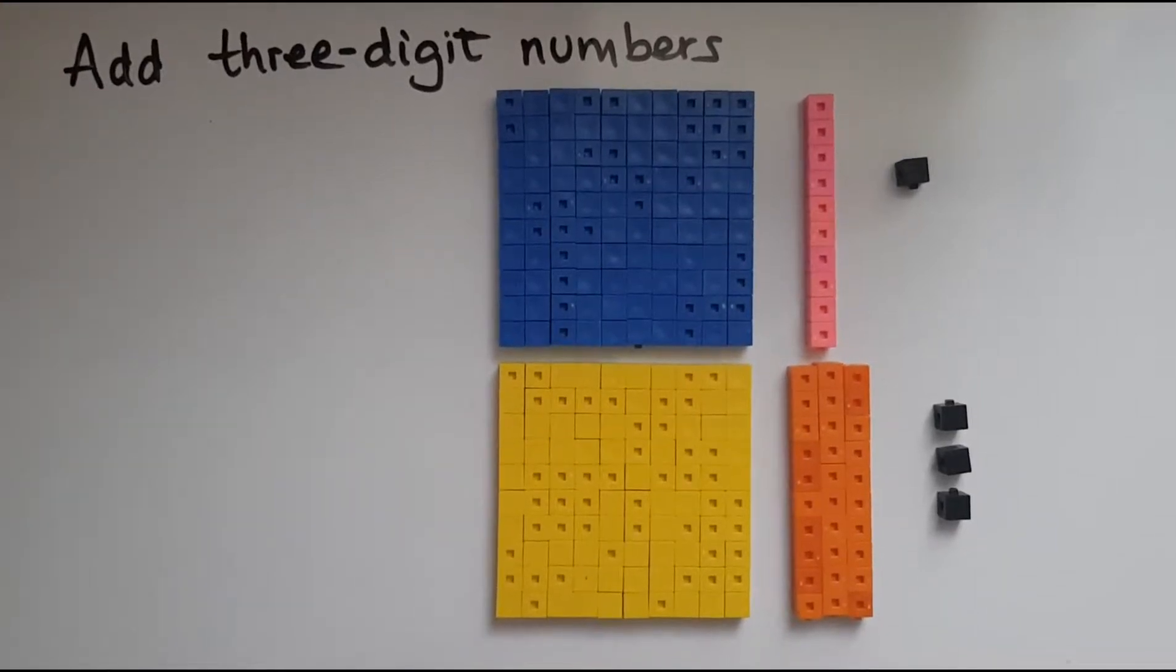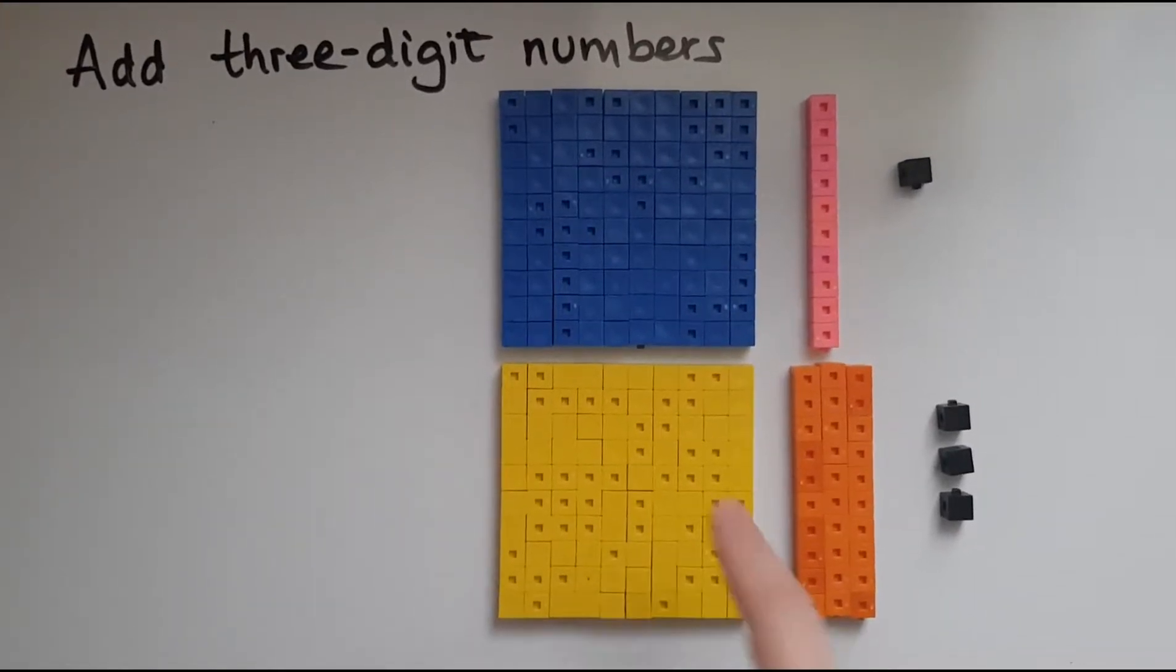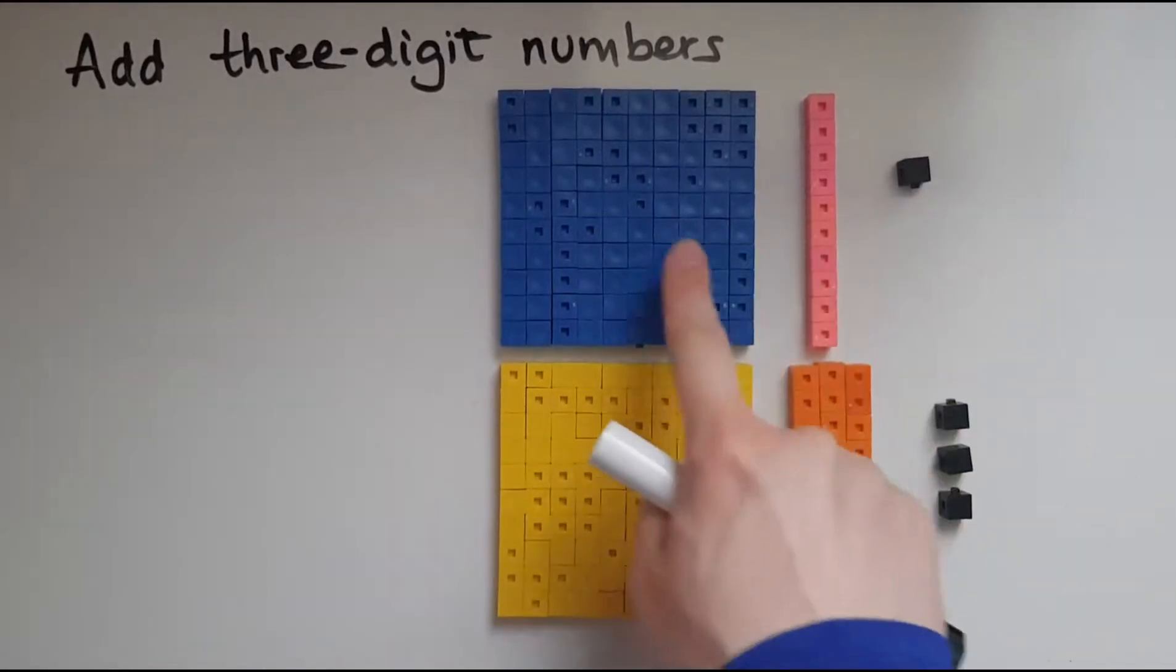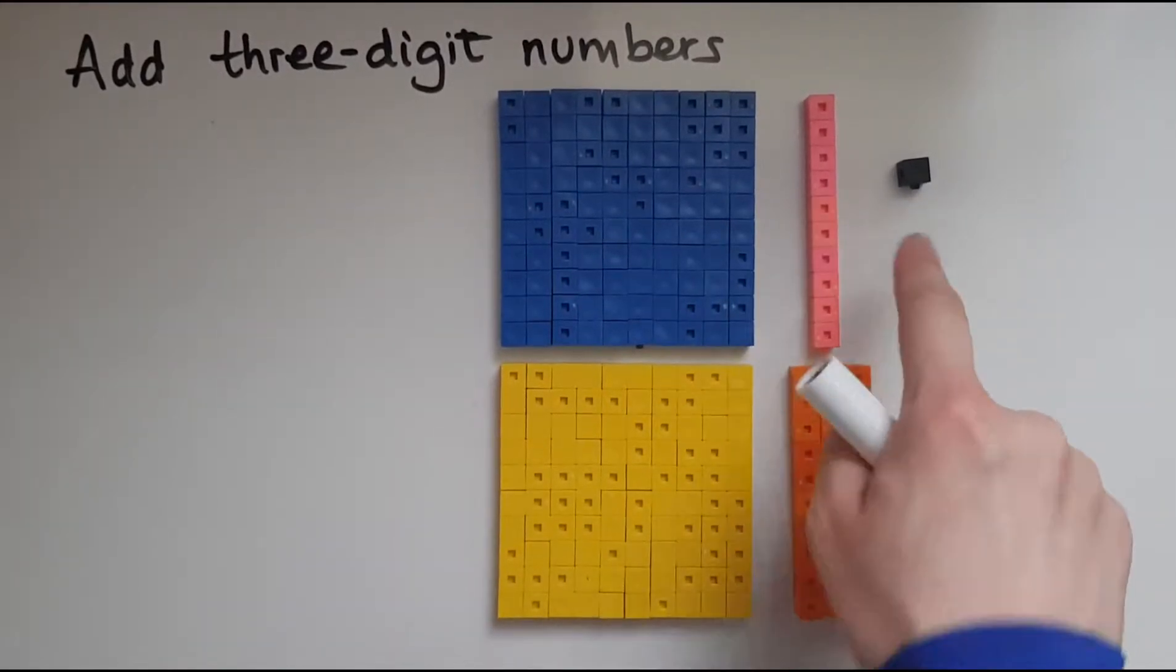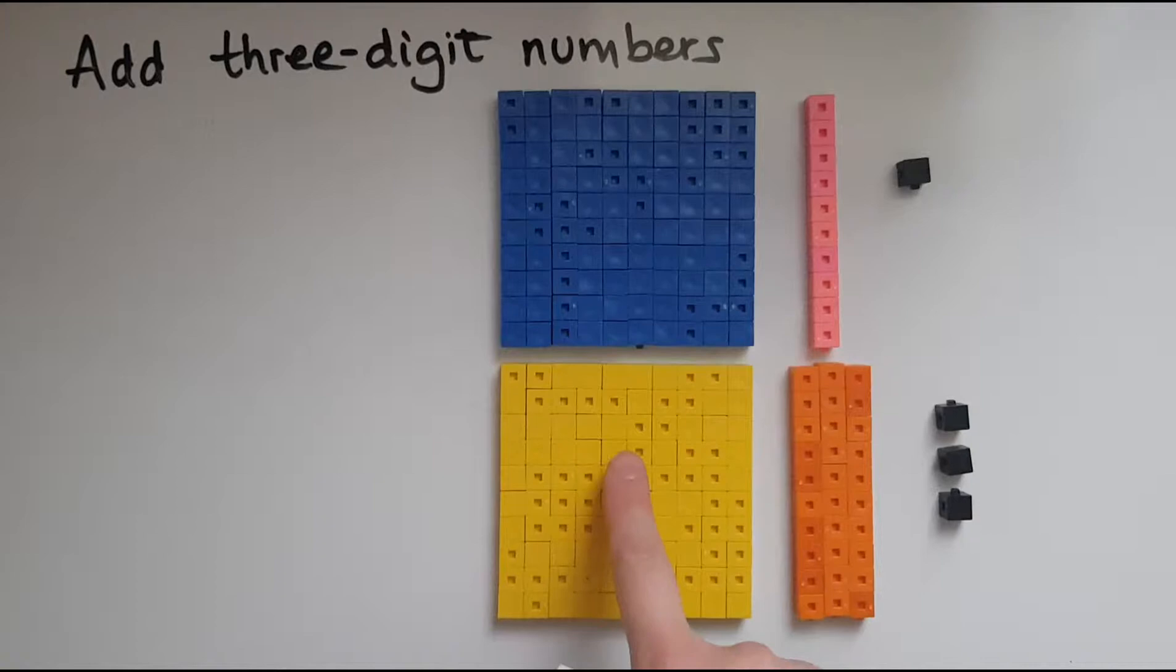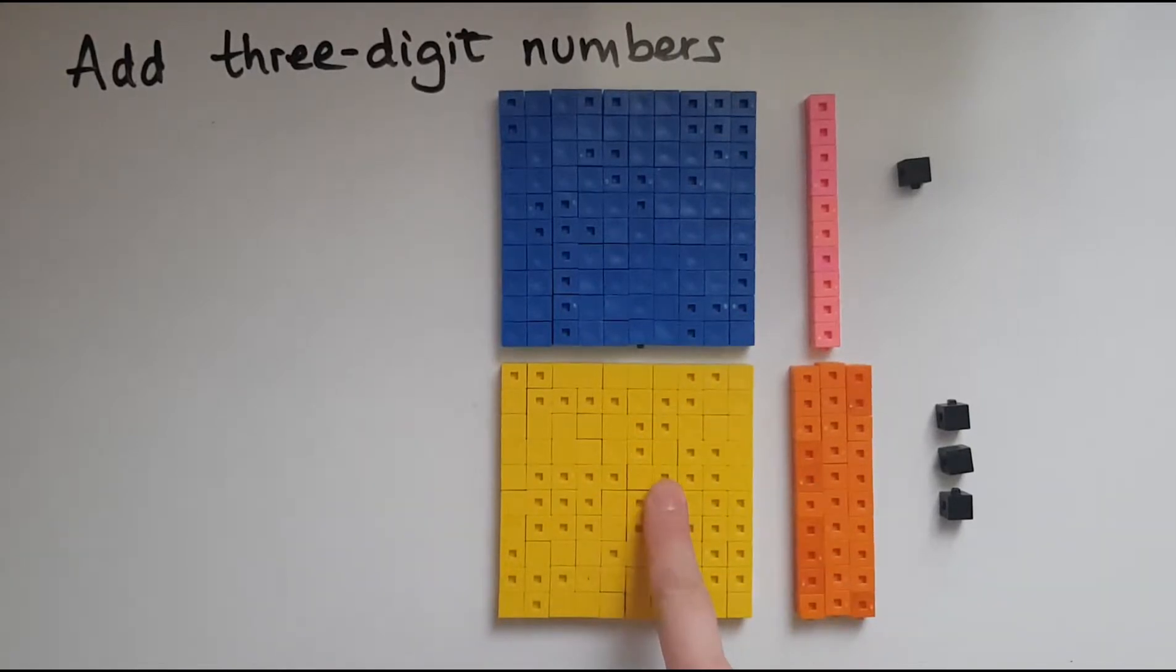In this video we'll learn to add three digit numbers. So I've represented here 111 and underneath that I've got 133.